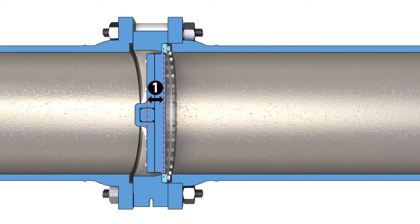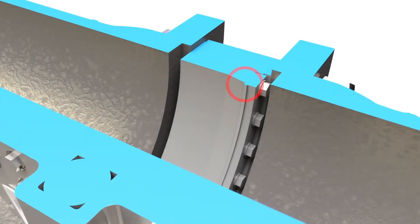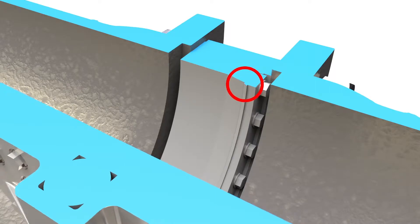The triple offset design provides smooth operation with ultra reliable metal to metal sealing. There's no contact between the disc and seat ring until the final closing.